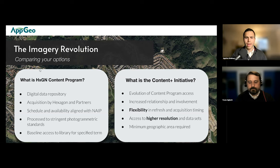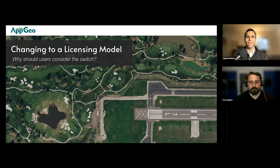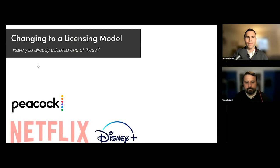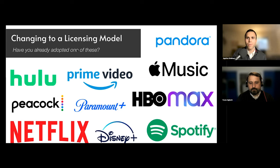Let's talk about streaming models for a moment and think about how this has become the norm in so many other industries. Software is now licensed on an annual basis rather than buying a CD. Content in our daily life — think about how many of you are using at least one of the platforms appearing on screen now. These are all examples of a content program: rather than owning the data, you're buying access to a large library and enjoying it over the internet. You don't have to lug around a box of DVDs anymore.